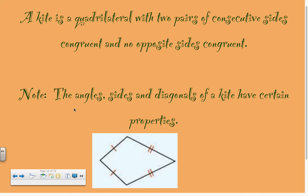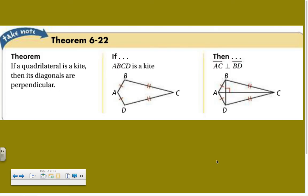The angles, sides, and diagonals of a kite have certain properties. In a kite, these two consecutive sides are congruent and these two are congruent. One theorem is: if a quadrilateral is a kite, then its diagonals are perpendicular — diagonal AC and BD will intersect at a 90-degree angle. Pause this movie, add it to your purple sheet, and press play when finished.